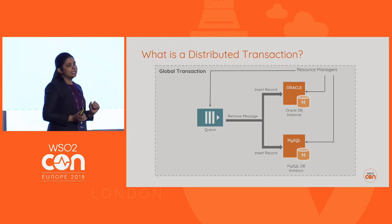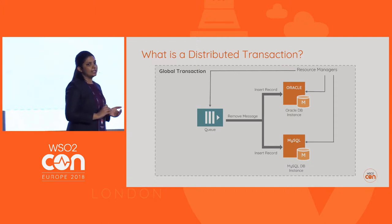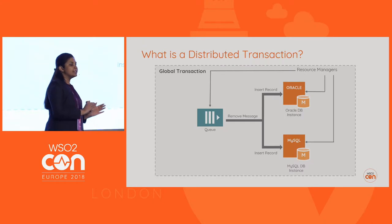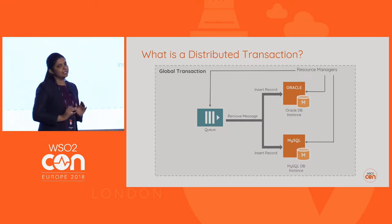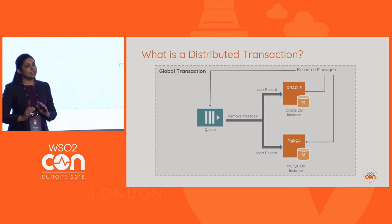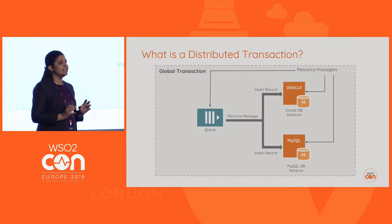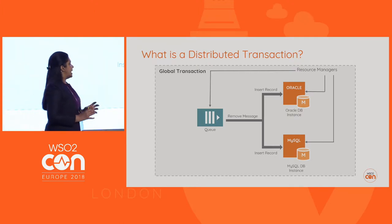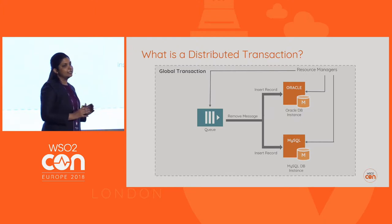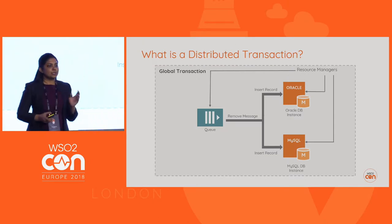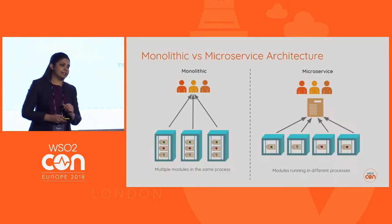In that case, we need to roll back all the other actions we have performed and make sure the system is back in the state it was before the transaction began. The only condition here is that everything should happen within a single thread of execution, and we need to maintain the same transaction context — containing information about this transaction — across all three resource managers.